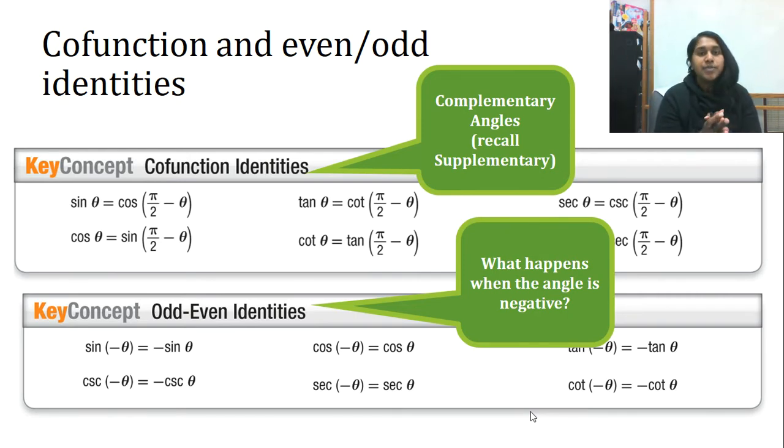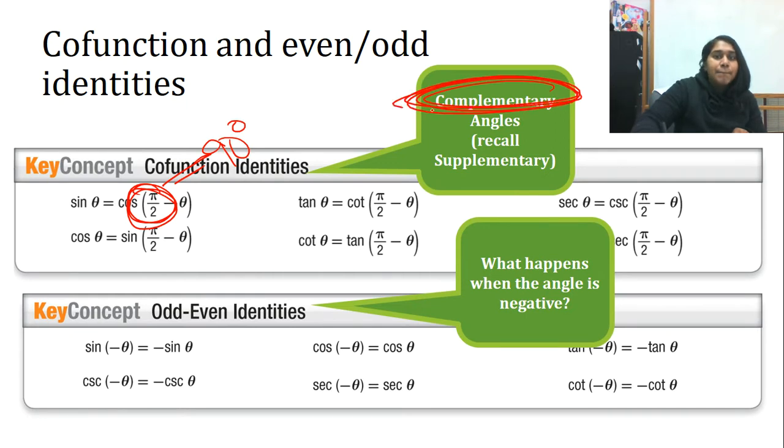And why is this important? Well, we've dealt with supplementary angles when we did the Law of Sine's ambiguous case. But here we're dealing with complementary angles when you have a cofunction identity. What that really means, in layman's terms, is that you are moving over by one whole quadrant. Pi over 2 is equal to 90 degrees, so it is a complementary angle.